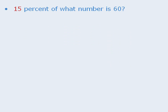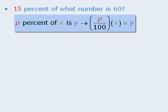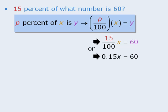Let's try another one. This question is already written in a format similar to our rule, so we can plug the corresponding values into the formula to get 15 over 100 times x equals 60, which we could also write as 0.15 times x equals 60 using decimals.